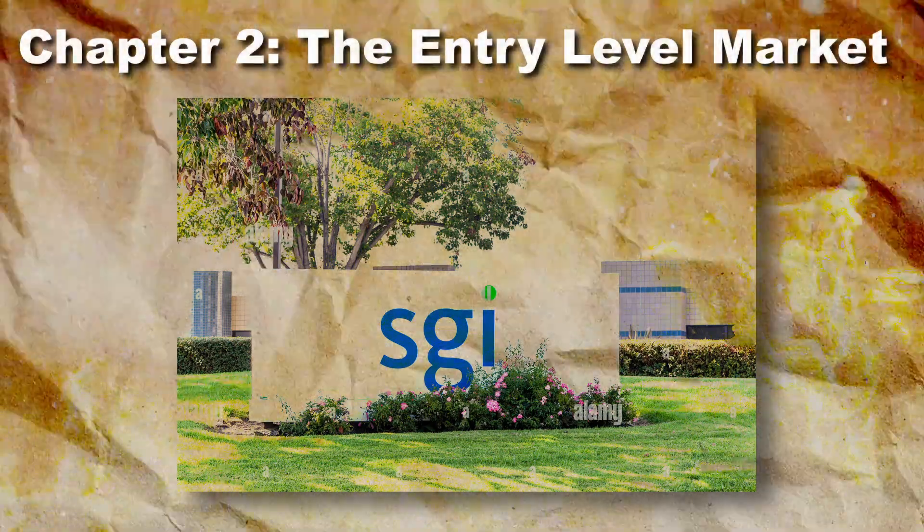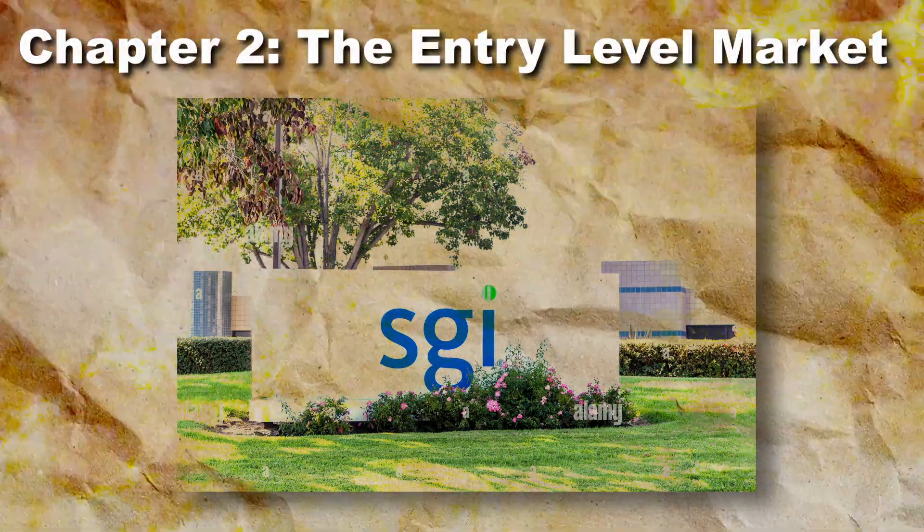But SGI had a problem: distribution. They were a small company without a massive sales force, so they struck a deal with Control Data Corporation in 1986. CDC was a major supercomputer vendor and agreed to resell SGI's machines under its own branding. This partnership got SGI's technology into big accounts it couldn't have reached alone. By the late 1980s, SGI's revenue hit about $167 million.